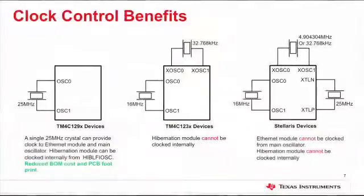The clocking mechanism on TM4C129x devices has been designed while keeping your end application in mind. The new clock distribution tree provides clock to most peripherals from a single clock source. Only one single 25 MHz crystal can provide clock to the Ethernet module and the main oscillator. The hibernation module can be clocked internally from the hibernation low-frequency oscillator. This results in reduced BOM cost and PCB footprint.